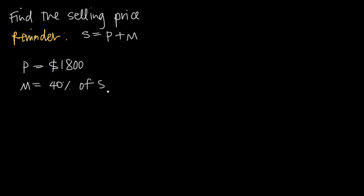In other words, we know that the business bought the item for eighteen hundred dollars. We know that they're going to sell it to us for some amount of money, but we don't know what. And we know that they marked it up by forty percent of the selling price. In order to find selling price, we just need to plug these values into our formula and then solve for S.